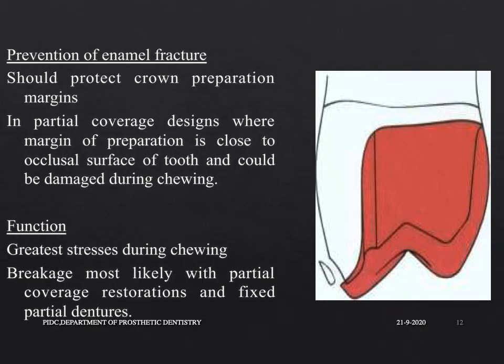Regarding prevention of enamel fracture, the temporary restoration should be able to protect the crown preparation margins, especially in partial coverage designs where the margin of the preparation is close to the occlusal surface of the tooth, which could be damaged even during chewing.